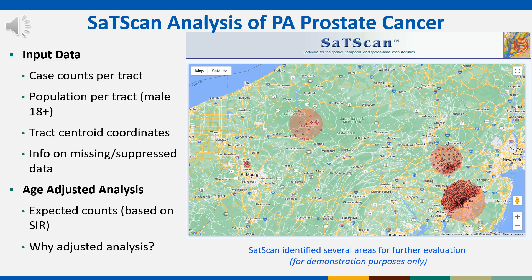After adjusting for the age distribution, SaTScan identifies six significant clusters. Compared to the unadjusted analysis — the analysis that just adjusts for the population — the age-adjusted analysis shows that the total number of clusters decreases from 20 to 6. Some cluster areas decreased in size, and some cluster areas increased in size. You can dive deeper into these interpretations, providing further insight into how the age distribution may have explained or concealed clusters of prostate cancer.